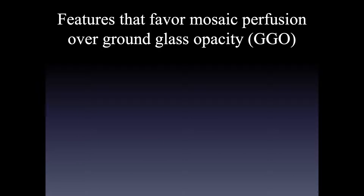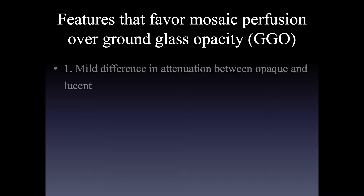How do we make the distinction between mosaic perfusion — lucent lung abnormal — and ground glass opacity? Here are some features that favor mosaic perfusion. None of these are perfect and you'll see exceptions, but these are the rules and they're pretty good, although not perfect.